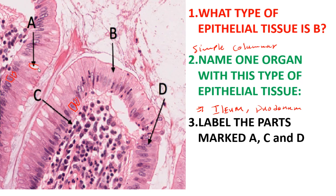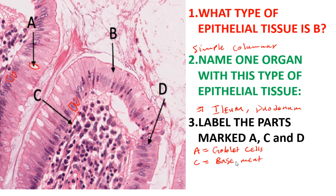Looking at A, this can only be the goblet cells. The goblet cells have a mucus cavity, so they are filled up with a lot of mucus — that is why we identify them as goblet cells. Then looking at C, they are pointing to this lining, which is the basement membrane.